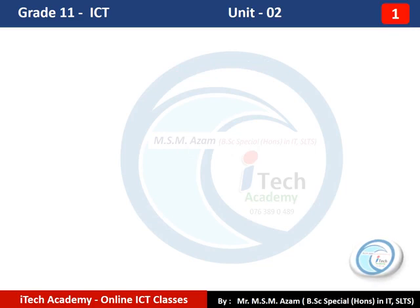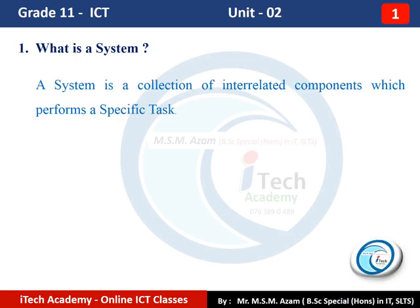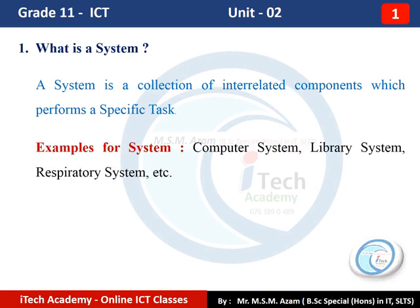Question Number 1: What is a system? A system is a collection of interrelated components which performs a specific task. There are a lot of examples for systems in our world. Examples include computer system, library system, respiratory system, and so on.